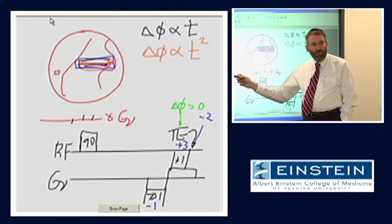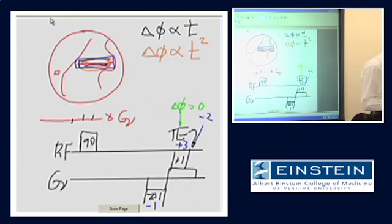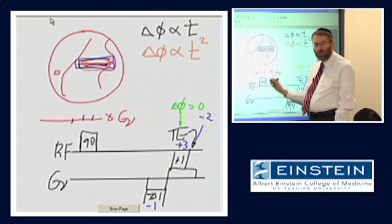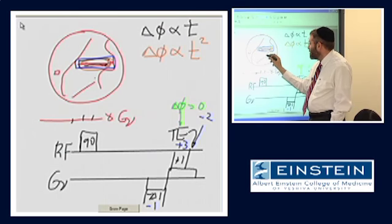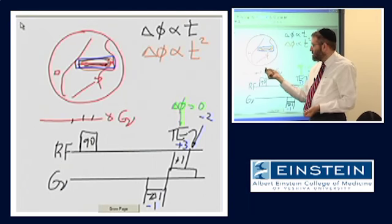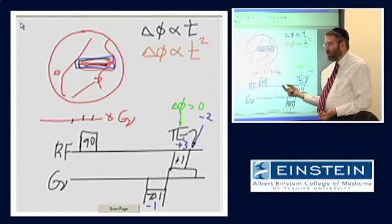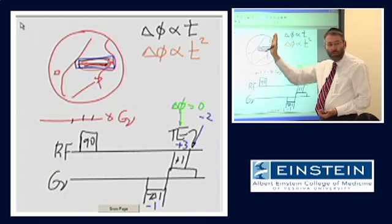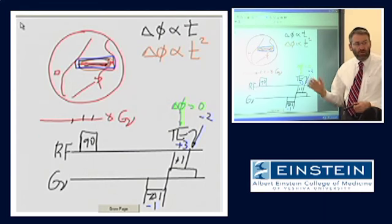This could be along the frequency encoding gradient — I made a very simple example here — or equally along the phase encoding gradient. And of course, flow is never perfectly parallel to the gradient magnetic field. Even if our flow direction looks oblique, we essentially have two components of flow since flow velocity is a vector. The component along the frequency encoding gradient will undergo this phase shift based on the frequency encoding gradient, and the component along the phase encoding gradient will undergo phase shifts based on the phase encoding gradient.